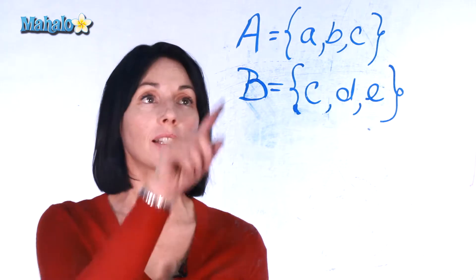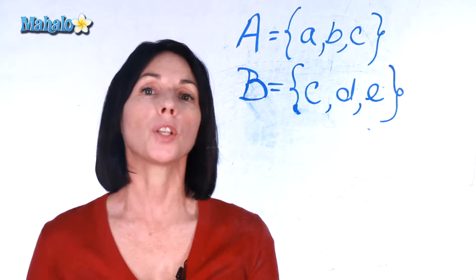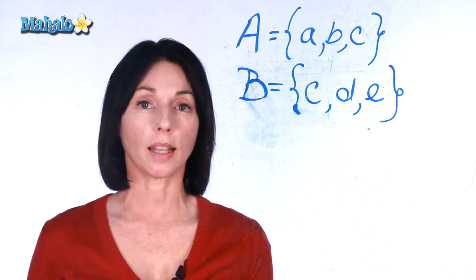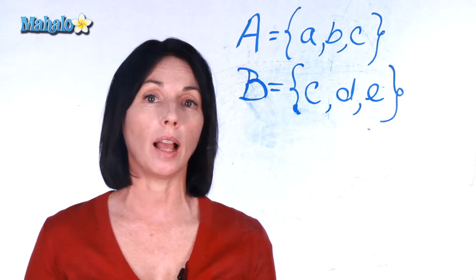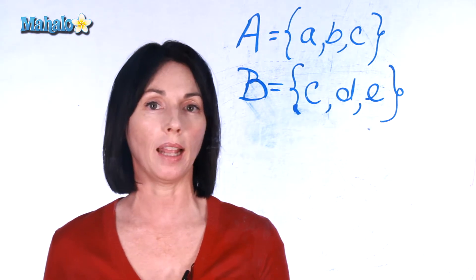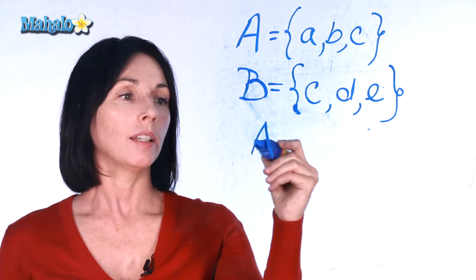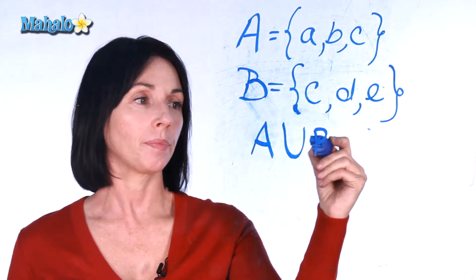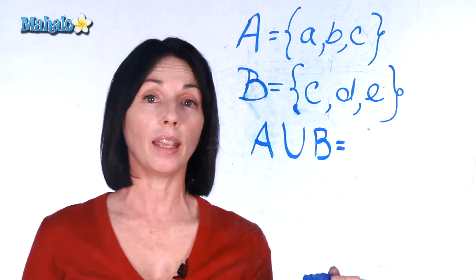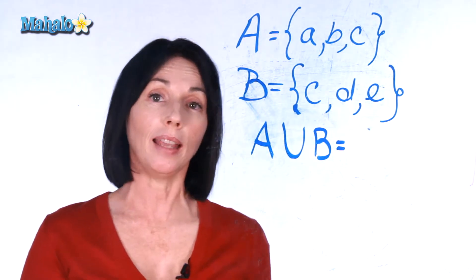We have two sets here, set A and set B. When we take the union of two sets, that means we combine all their elements together, but we don't duplicate elements. This is the notation for it. A union B means that we take all the elements in A and all the elements in B and make a new set.